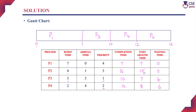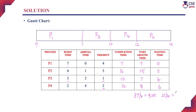Next, we identify the average turnaround time and average waiting time. Average turnaround time is the sum of the turnaround times of all processes divided by the number of processes. The sum of turnaround times is 37 and the number of processes is 4, so the average turnaround time is 9.25 milliseconds. The average waiting time is the sum of waiting times of all processes divided by the number of processes. The sum of waiting times is 21 divided by 4, giving 5.25 milliseconds.